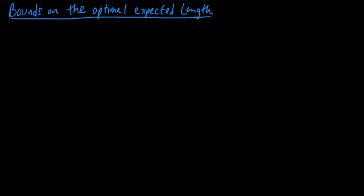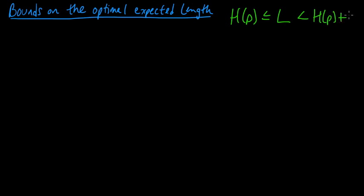We just made the remarkable observation that the entropy is a lower bound on the expected codeword length — the entropy H(p) is less or equal to L. In this video we're going to see that in fact you can get within one of the entropy, so there is a code for which L is strictly less than the entropy plus one, and this is true for any base b. Since we're going to construct a code with this property, and since the optimal symbol code is certainly at least as good as the one we construct, this will give an upper bound on the expected length for an optimal symbol code.